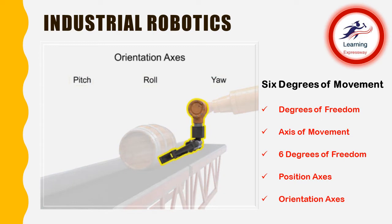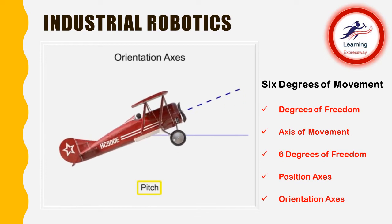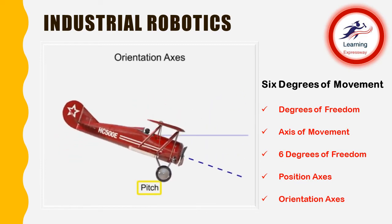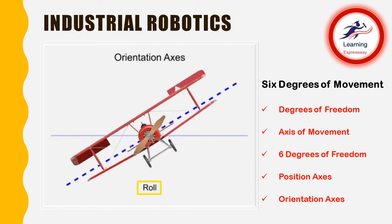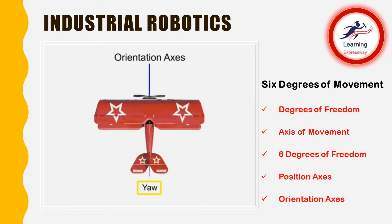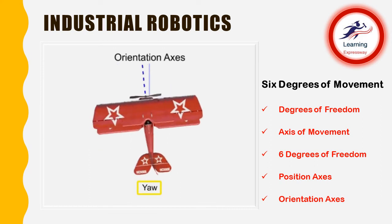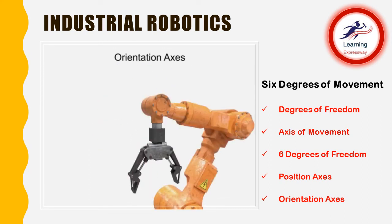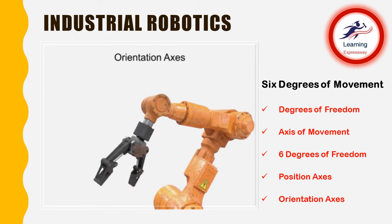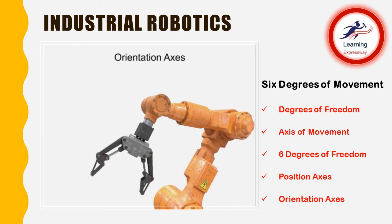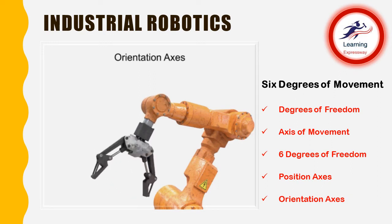This type of movement is most easily illustrated as it relates to aircraft movement. The robot's tool moves in the same way. Pitch moves the tool vertically. Roll rotates the tool about its center axis. Yaw turns the tool left and right.